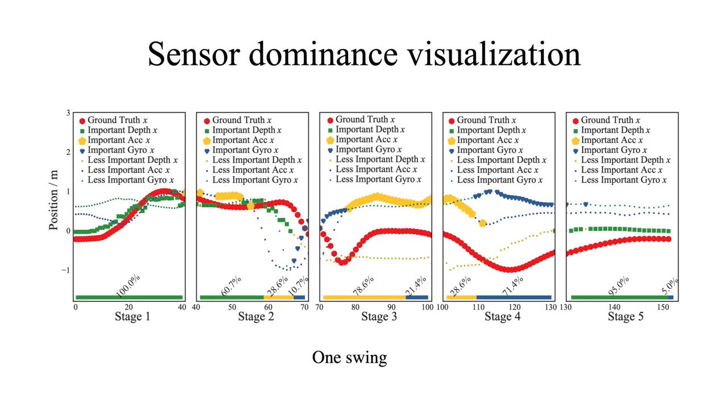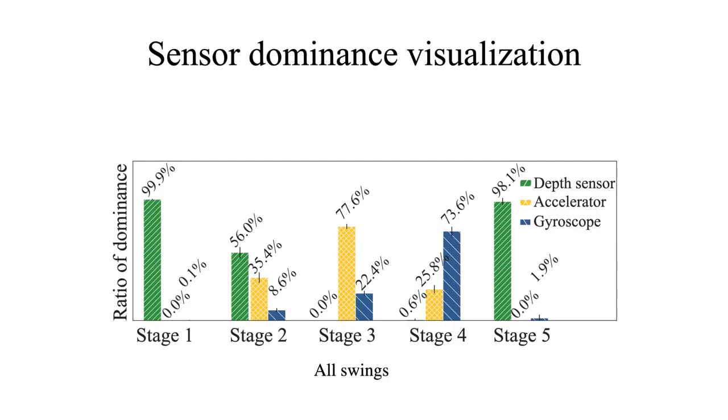We also analyzed the sensor dominance during different stages. We reached this by setting zero for different sensors and passing to our trained model to see how the results compare. From one swing example, we see that it's clear in stages one, two, and five, the depth sensor takes its dominance, which is not surprising because in these stages the depth sensors are not occluded. While when the swing is occluded in stages three and four, we see that IMU takes its dominance. We also visualized all swings of these sensors' dominance. Similarly in stages one, two, and five, the depth sensor takes its dominance, and stages three and four, the IMU sensor takes its dominance.